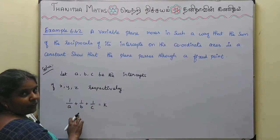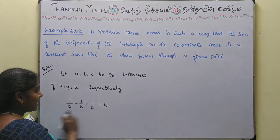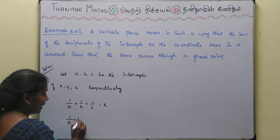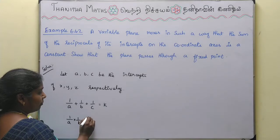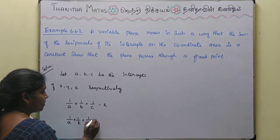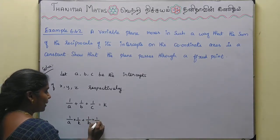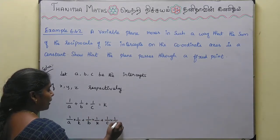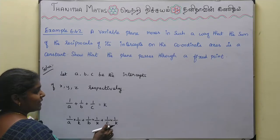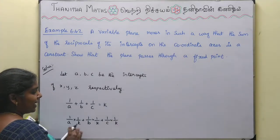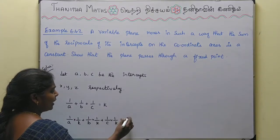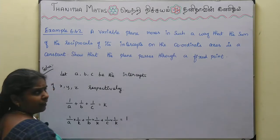Now we are going to divide by k. So: (1/a)(1/k) + (1/b)(1/k) + (1/c)(1/k). That gives us 1/(ak) + 1/(bk) + 1/(ck). Dividing k by k gives 1.